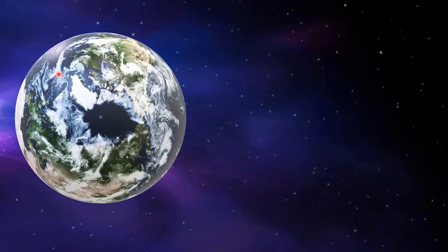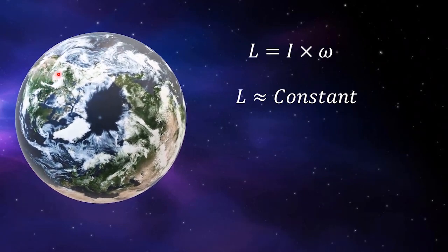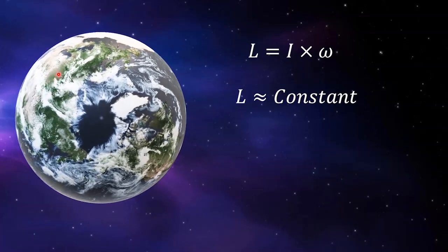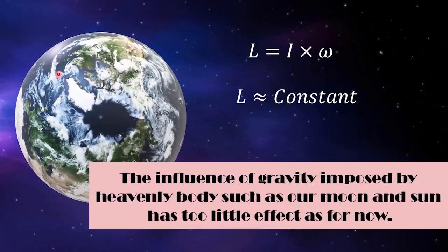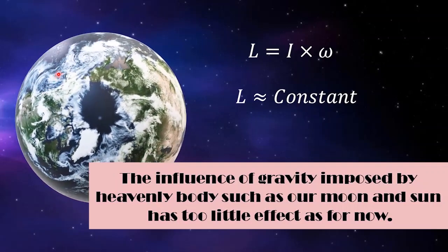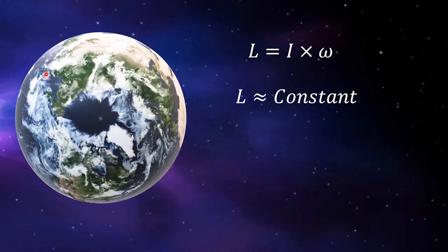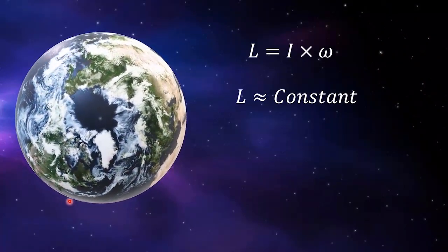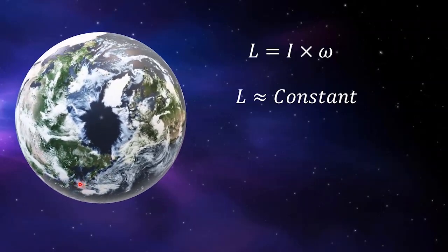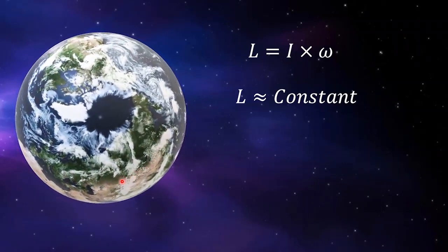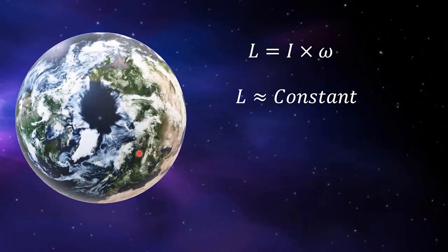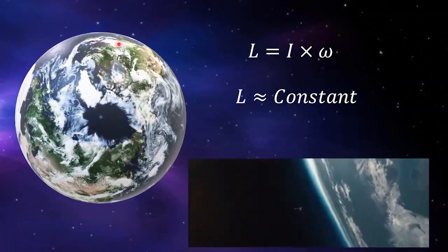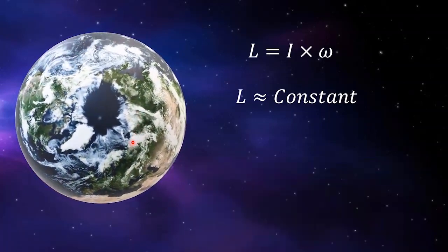It is the same reason our planet continues to spin on its axis — its angular momentum is conserved. The influence of gravity from nearby bodies such as our Moon and Sun has too little effect for now. So if you want to change the angular momentum of the Earth, that's like science fiction — maybe you could call on Superman, or perhaps some alien technology that can produce a torque to literally change the Earth's angular momentum.